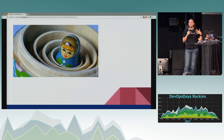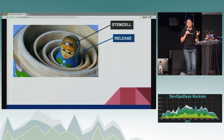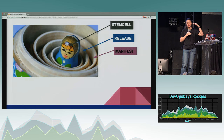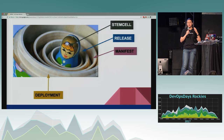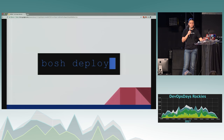I like viewing BOSH as a Russian nesting doll with all the little components. At the very core you're going to have a stemcell. You're going to have a large number of releases — one, four, or twenty — all built on top of a stemcell. Then you're going to have a long manifest that defines all your properties, network settings, and configuration for each of your releases. When you get all of those pieces together, you get the outer shell, which can be defined as a deployment.